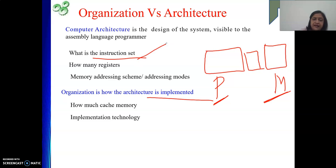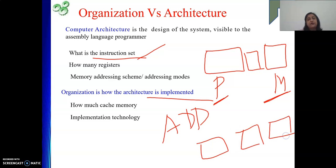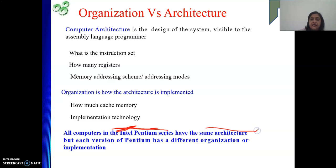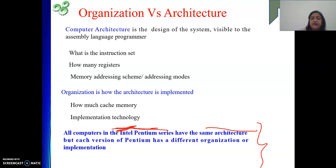Whenever I have an add instruction in my architecture, that means my hardware needs a set of adders to perform the addition. That particular hardware support for realizing the architecture is nothing but organization. A great example: all computers in the Intel Pentium series have the same architecture — their design is the same. But each version of Pentium has a different organization. From one version to another, the organization is improved: faster design, more memory capacity, higher processor speed — while the architecture remains the same.